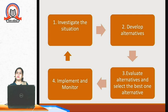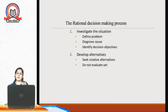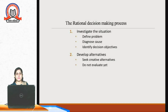The rational model of decision making begins with investigating the situation. It is important to identify the root cause of any problem, define that problem clearly, and determine on which issue a decision needs to be taken. The next step is developing alternatives. We will have various alternatives — for example, A, B, and C. We then explore, identify, and seek various creative alternatives without jumping to conclusions right away.